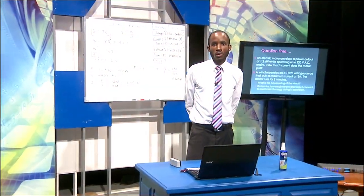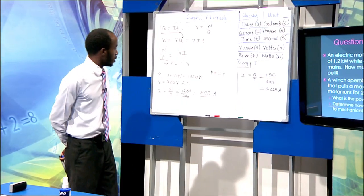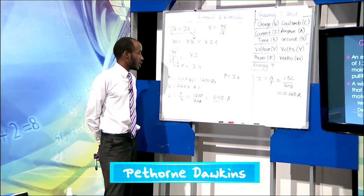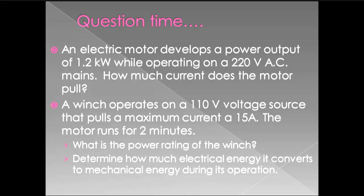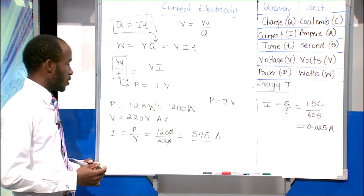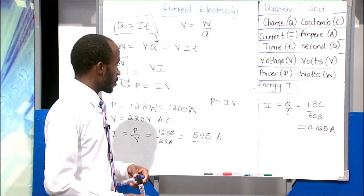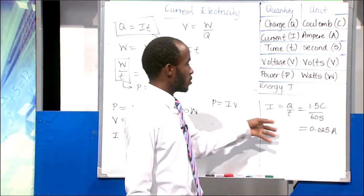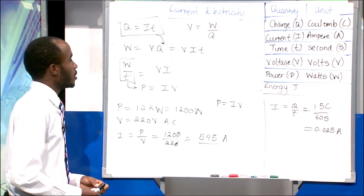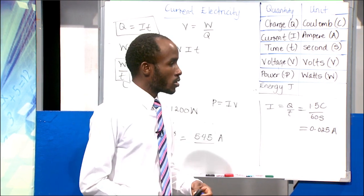Welcome back to Schools Not Out, where we are discussing CSEC physics. The electric motor develops a power output of 1.2 kilowatts (1,200 watts) while operating on a 220-volt AC mains supply. Using I = P ÷ V = 1,200 ÷ 220, the motor pulls 5.45 amperes of current. For the previous question, the current was found to be 0.025 amperes.